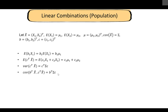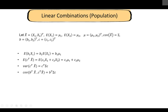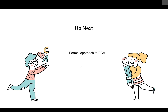These linear combination properties — especially the last two on variance and covariance — are important and will be used for PCA. For a sample of size n on p variables, the same properties hold, just replacing the population mean with the sample mean x-bar and sigma with the sample covariance matrix. That's all for this video; in the next one we'll take a more rigorous and formal approach to PCA.